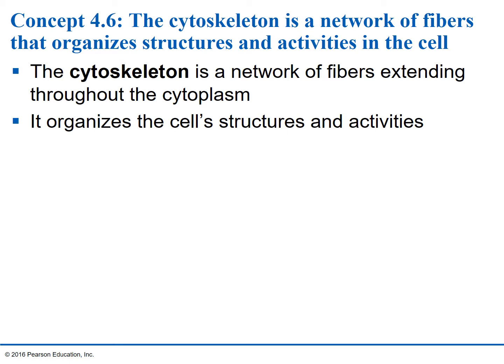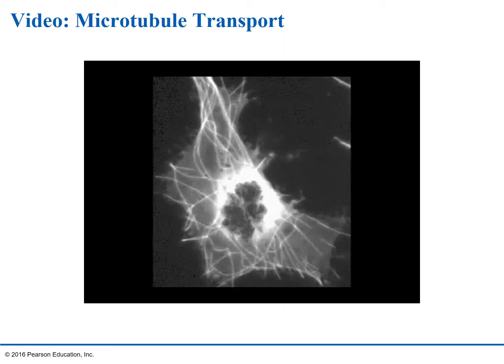The cytoskeleton is made out of three different types of fibers, and in addition to helping with cellular transport, it also gives the cell some structure. In the video, the center mass — where all of those little black specks are — will move. The wispy string-looking material is the cytoskeleton. Pay very close attention to how the tiny black dots only move on the cytoskeleton track.